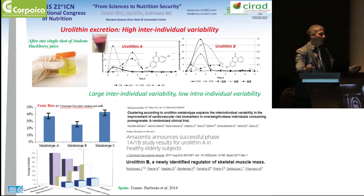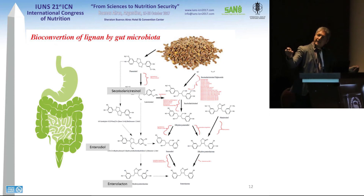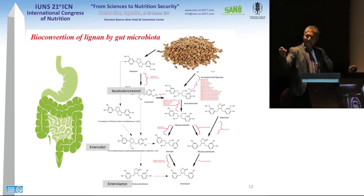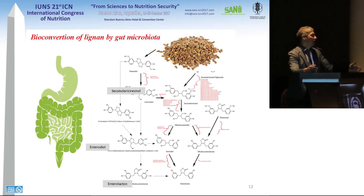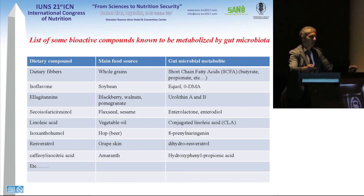The third example is lignans from gut microbiota — it is more or less the same story. We don't know exactly how many metabotypes exist. We know that secoisolariciresinol, which is a compound from flaxseed, can be metabolized into enterodiol and enterolactone — these are bioactive compounds. Metabotypes may exist but we don't know exactly. I think the list is very large — we are just starting to understand this — and I'm sure that we can find other metabotypes for the many bioactive compounds mediated by microbiota that appear in the literature.